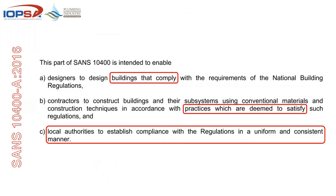Part A of SANS 10400 enables designers to design buildings that comply — so we don't work on matchboxes or high-rise buildings that are going to fall apart when people start chasing and installing services. It enables contractors to construct buildings and their subsystems — and here comes the plumber for the first time — using conventional materials and construction techniques in accordance with practices that are deemed to satisfy. If it's something experimental, it would require an engineer or rational design; if it's standard practice from this document, it would be acceptable.